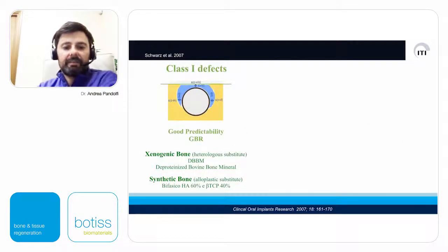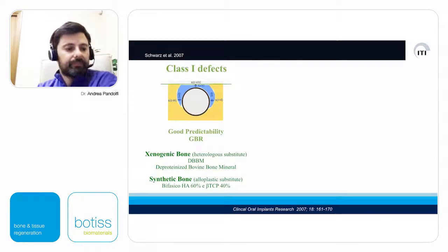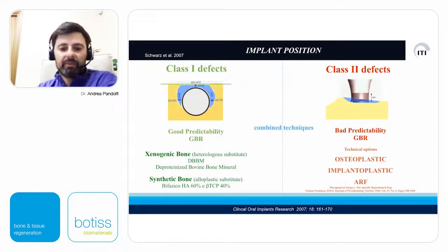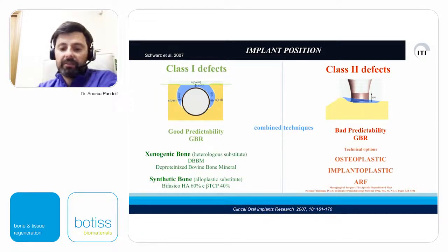Regarding types of defects around the implant, we can distinguish Class 1 defects, Class 2 defects, and combined defects. Class 1 is usually a vertical circumferential bone resorption around the implant — a cap shape well visible on intraoral X-ray. Class 2 is horizontal bone resorption with more indication for osteoplasty and implantoplasty with apical tissue repositioning. In larger defects we have a combination of both typologies. GBR has good predictability on Class 1 defects.